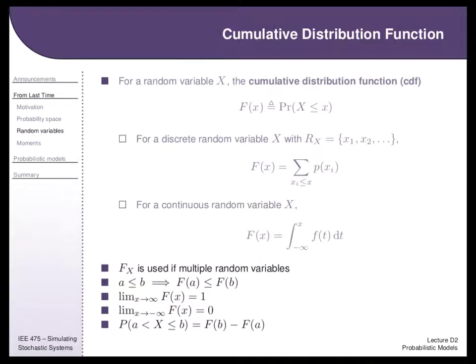The CDF ends up being a very useful function with nice properties. If you ever see curves that are decreasing, they can't be CDFs because CDFs are always non-decreasing. The right-hand side of the CDF is always equal to one, and the left-hand side is always equal to zero. If you want to calculate the probability of an interval and you have a CDF, you can just calculate the CDF at one end of the interval and subtract the CDF at the other end — very handy. CDFs have other nice properties we'll exploit when generating random variables.